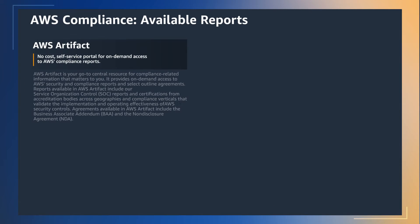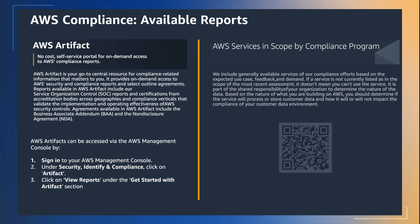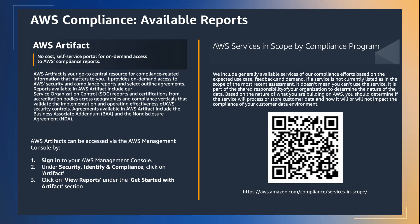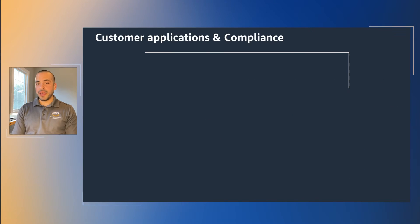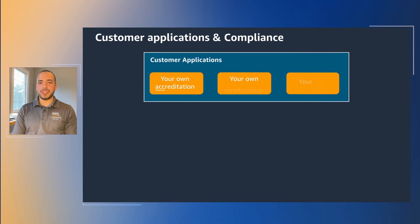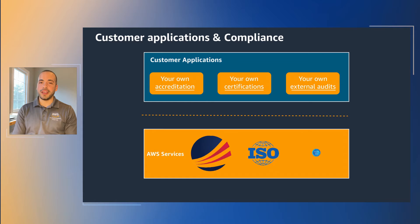AWS Artifact is a central resource for compliance-related information. It provides on-demand access to AWS security and compliance reports and select online agreements. Reports available in AWS Artifact include our service organization control reports, payment card industry reports, and certifications from accreditation bodies across geographies and compliance verticals that validate the implementation and operating effectiveness of AWS security controls.